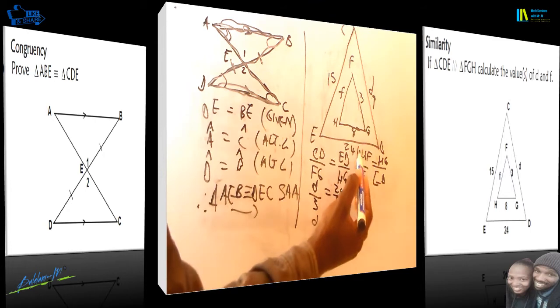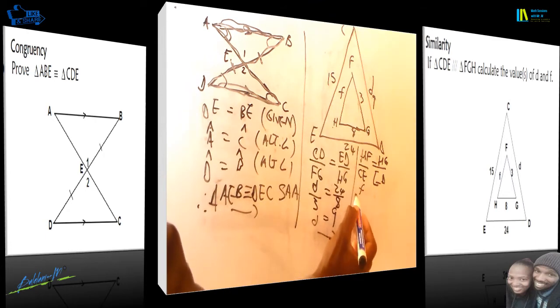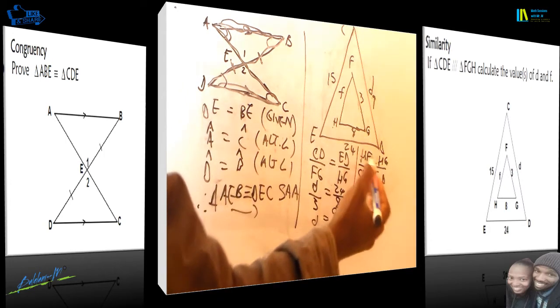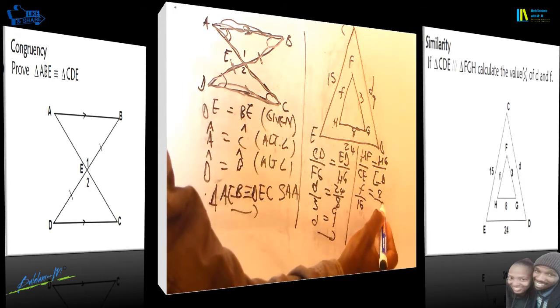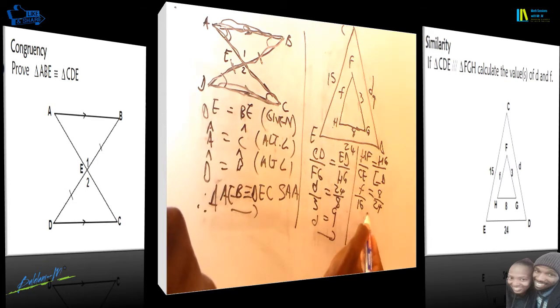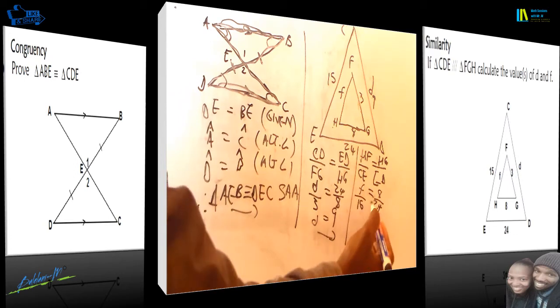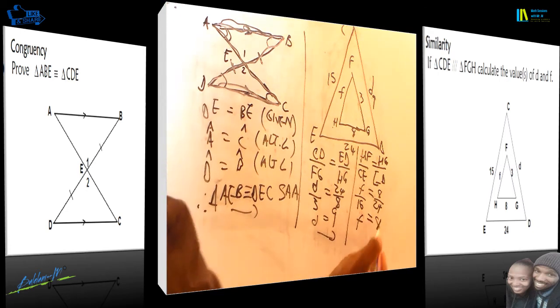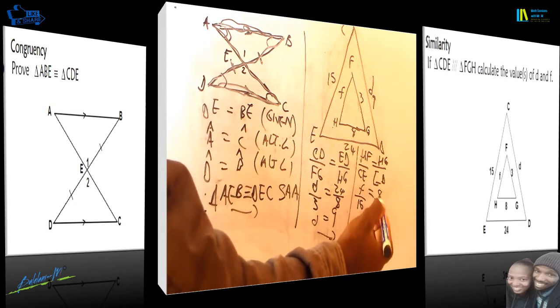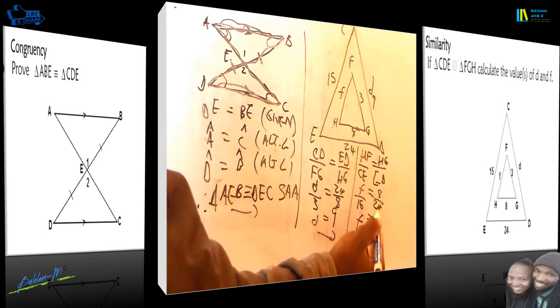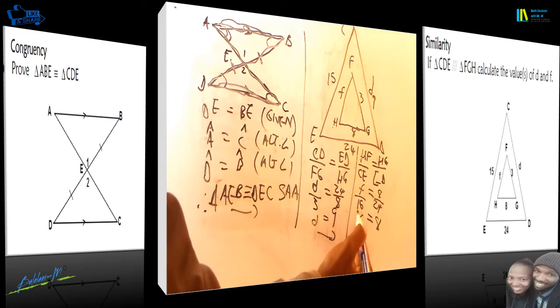Now, HF is our unknown. It's divided by CE. CE we are given is 15. HG we are given as 8, and also ET is equal to 24. So what do we have now? We have 1 over 3 multiplied by 15, which is basically 15 divided by 3. So f will be equal to 5, because when you take 8 divided by 24, it's going to be 1 over 3, which is basically 1 over 3 times 15.